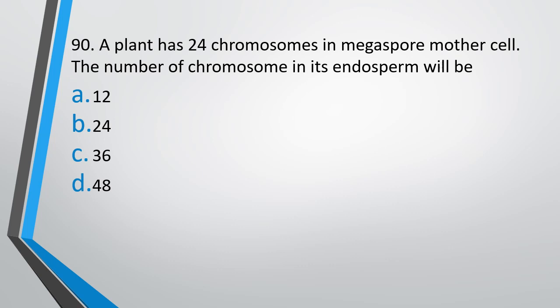Question number 90. A plant has 24 chromosomes in megaspore mother cell. The number of chromosomes in its endosperm will be: 12, 24, 36, 48. The correct answer is option C, that is 36.